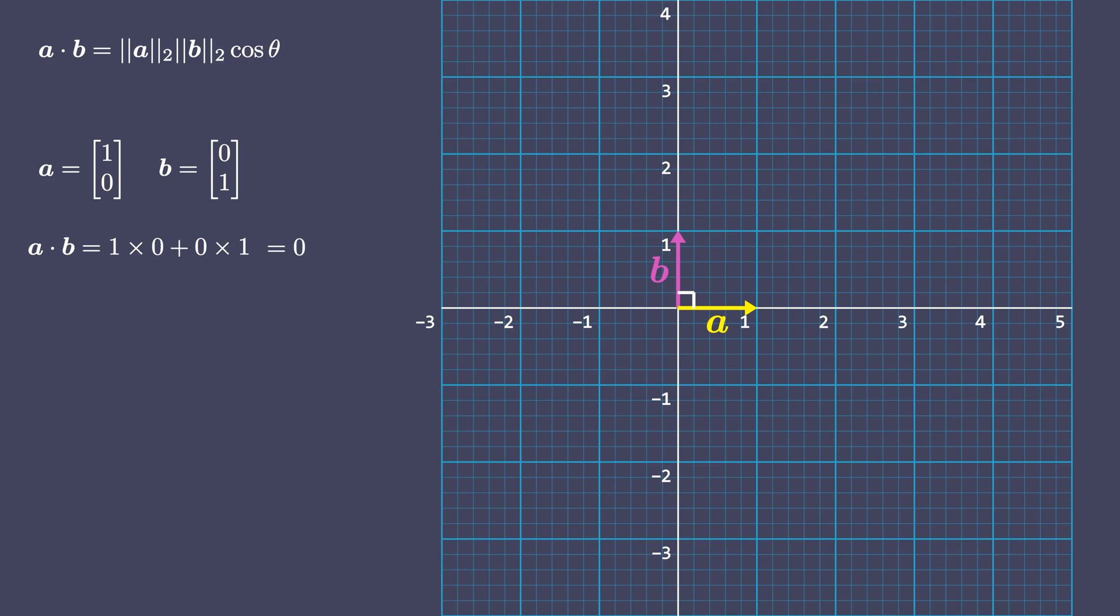Let's see what happens if we compute the dot product of a vector with itself. Can you guess? Since the angle between a vector and itself is 0 and cos 0 equals 1, the dot product of a vector with itself is similar to finding the square of its magnitude.